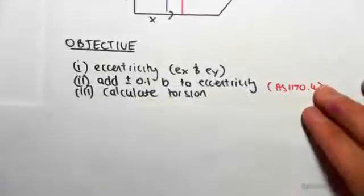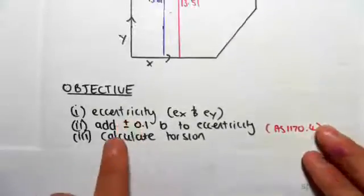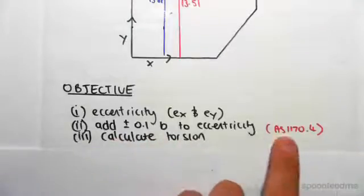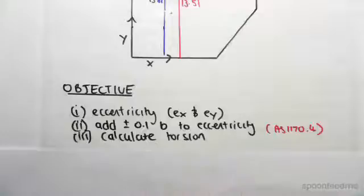Hey guys, the objective with this video is to find the eccentricity in our structure. We then have to add 0.1b to the eccentricity, which is just a clause in the code, and then we're going to calculate the torsion.